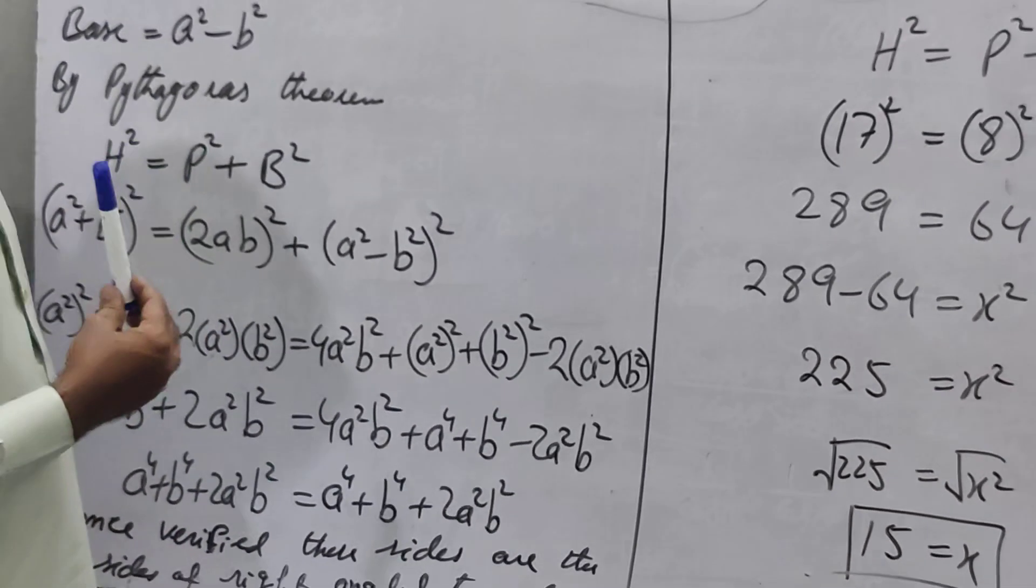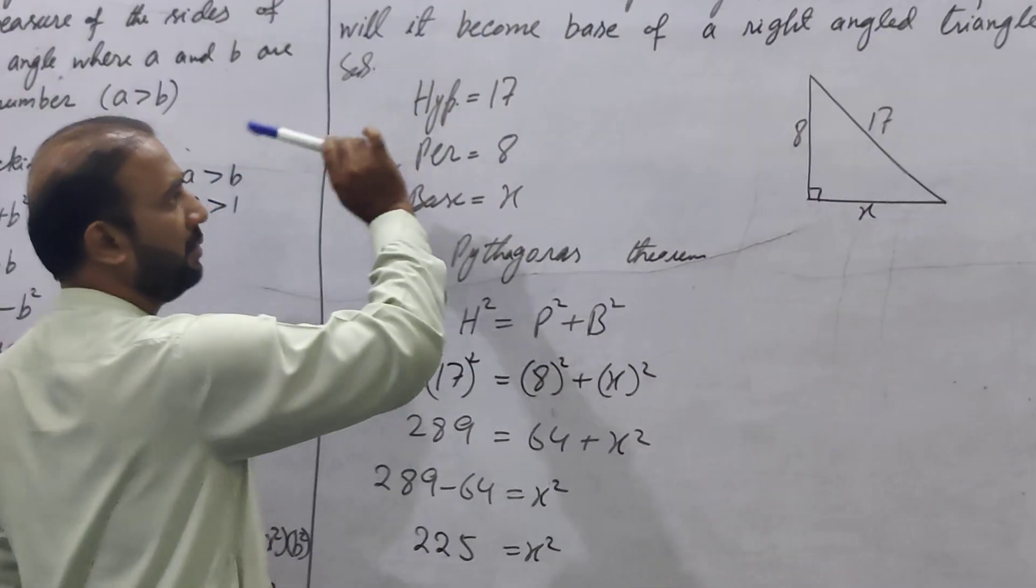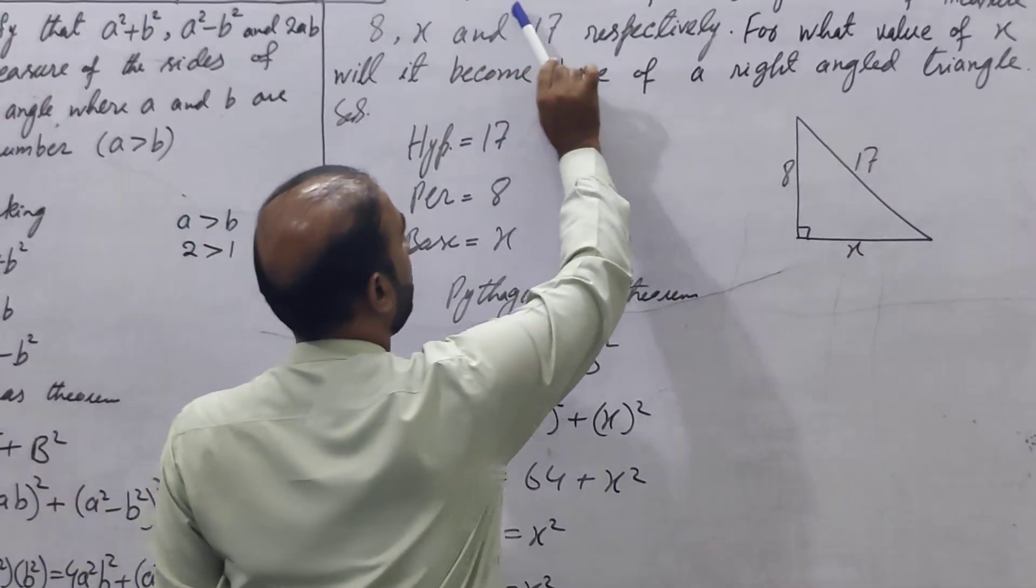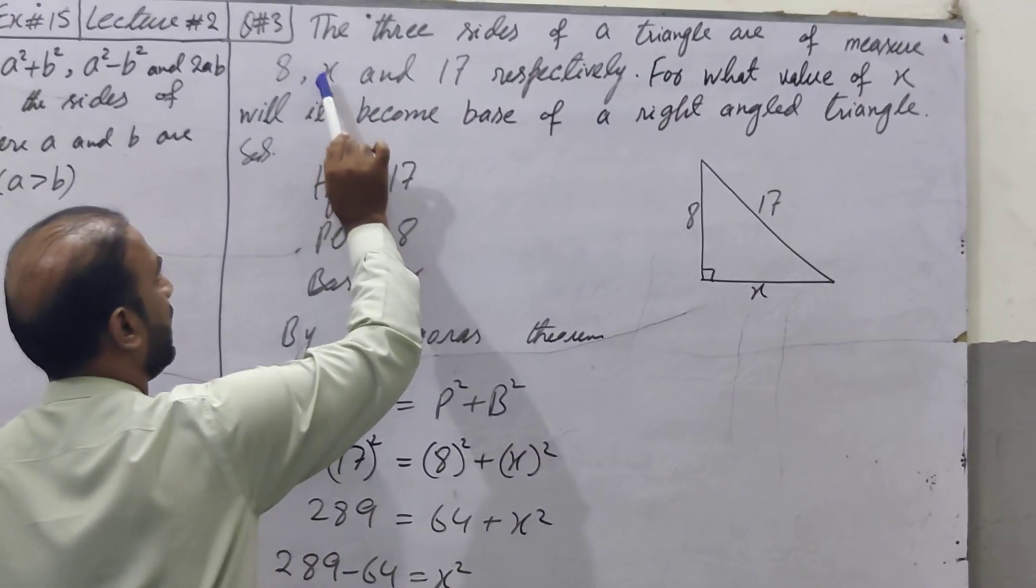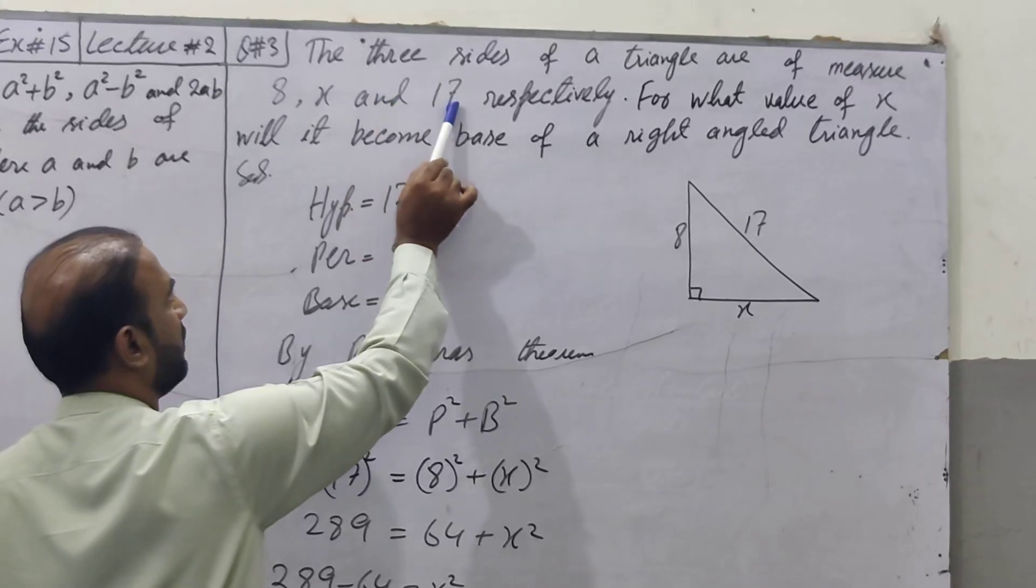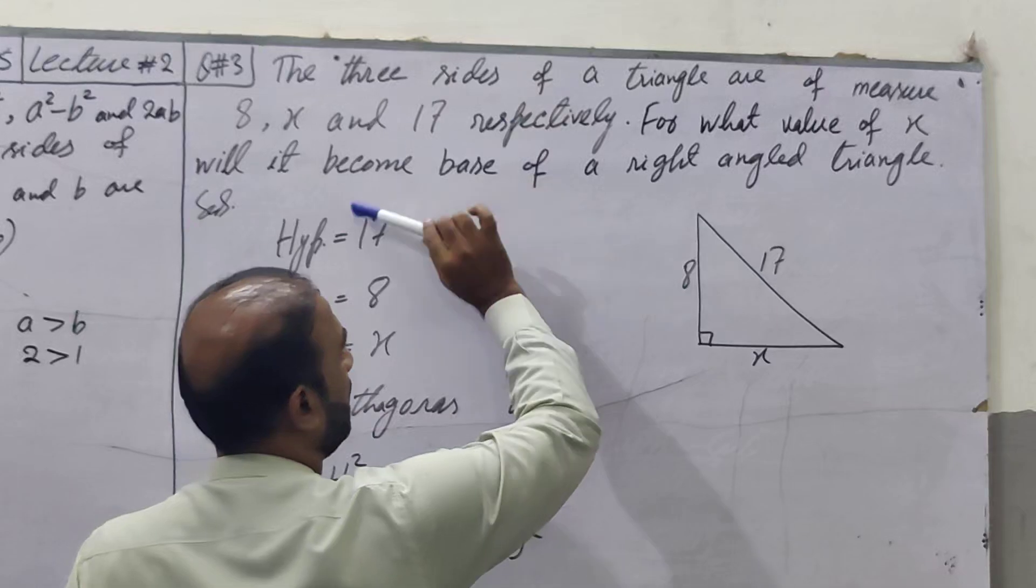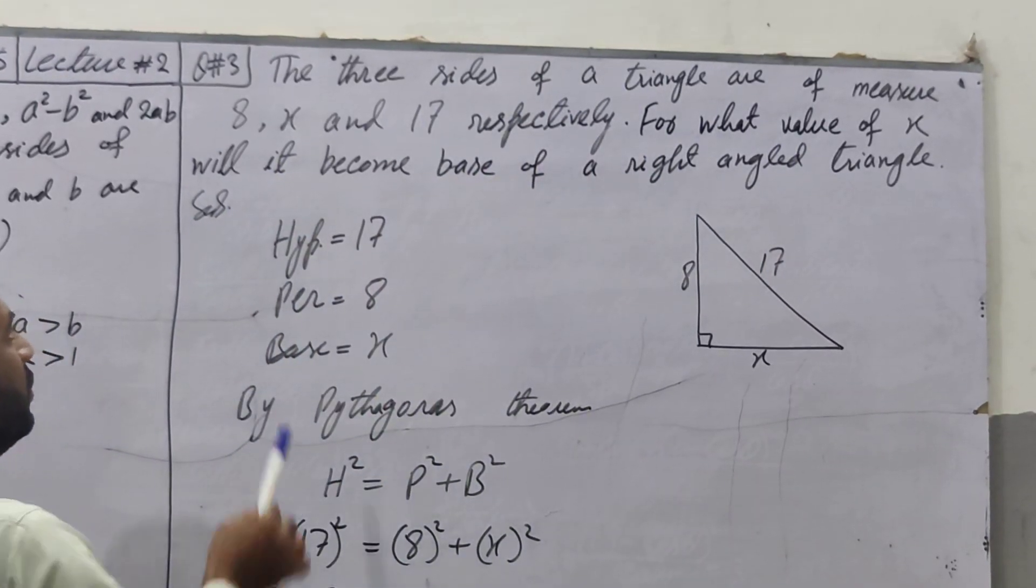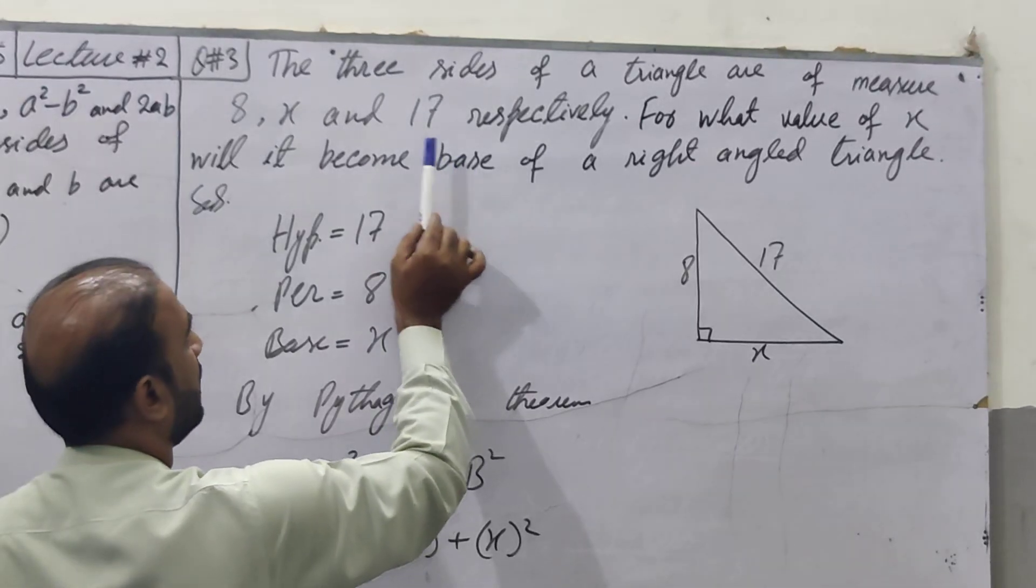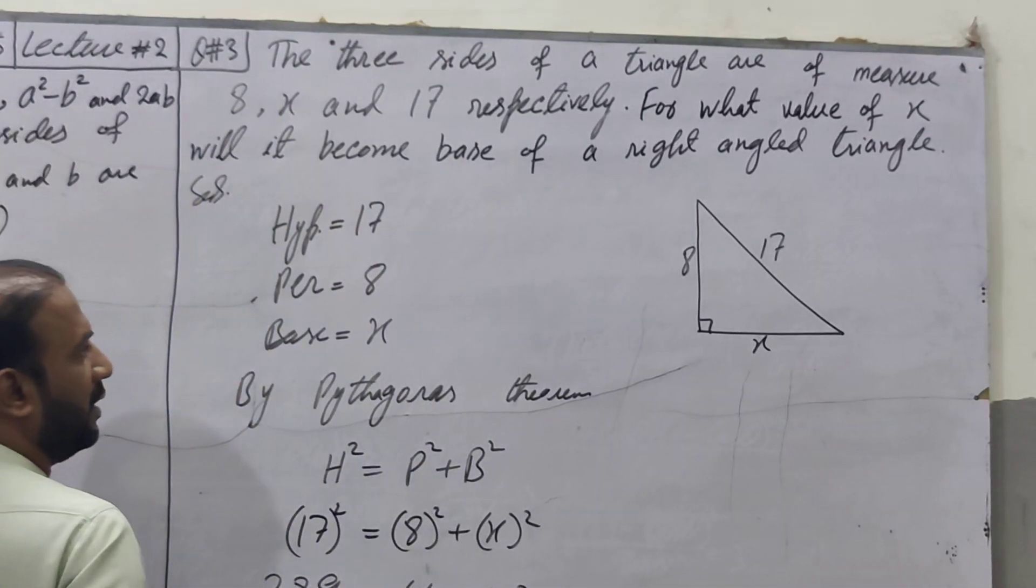Now if I answered question number 2, you can answer question number 3. Three sides of a triangle are X, X, and 17 respectively. For what value of X will it become a right angled triangle? Now we need to find the X value.